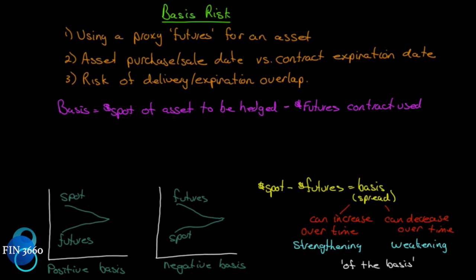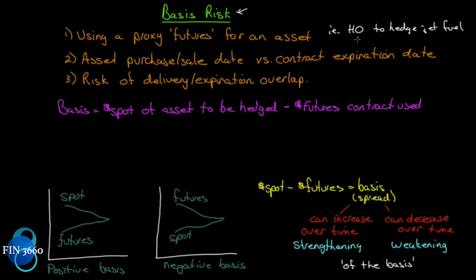We've alluded to this several times — the concept of basis risk. Now we're going to figure out what this is. It is the risk that comes from using a proxy futures contract for an asset. This means the asset you want to hedge doesn't have a futures contract, so you use a futures contract whose underlying asset is close to what you want to hedge. A common example is using heating oil (ticker: HO) to hedge jet fuel — airlines use this because the correlation is close enough. This is referred to as cross hedging.